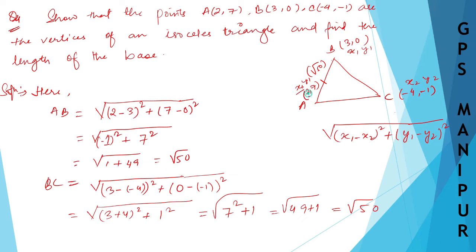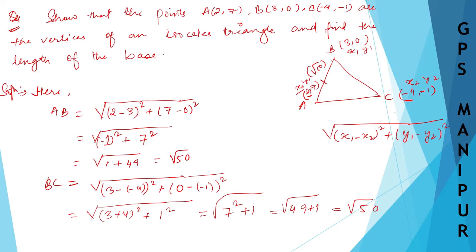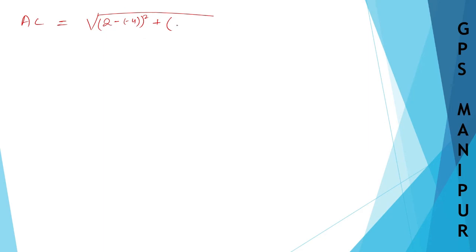So X1, 2 minus (-4). X1 minus X2 will be 2 minus (-4), X1 minus X2 whole square plus Y1. What is Y1? Y1 is 7 here. 7 minus (-1). So 7 minus (-1) and this is also whole square.